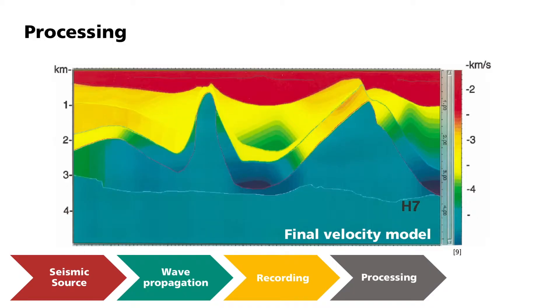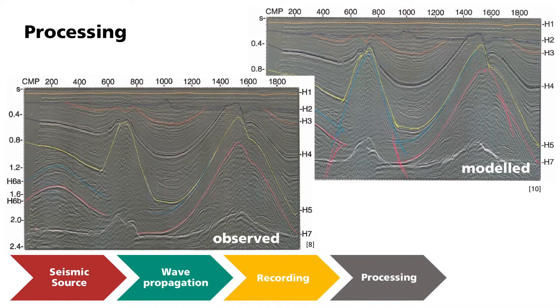Here you can see the result for the final propagation velocity model. One can clearly see the difference between the salt and the overlying strata. With the help of this model, the seismic profile can also be forward calculated on a test basis. In comparison with the measurement data, one can see that the characteristic properties of the observations can be well reproduced in the forward calculation.